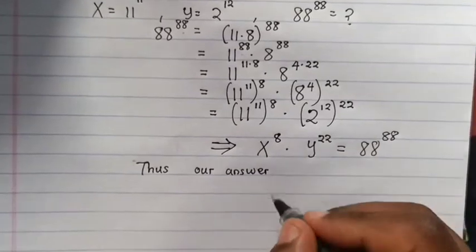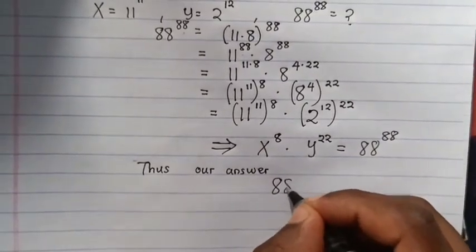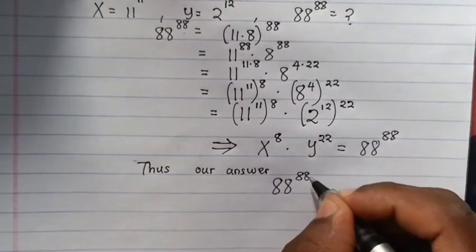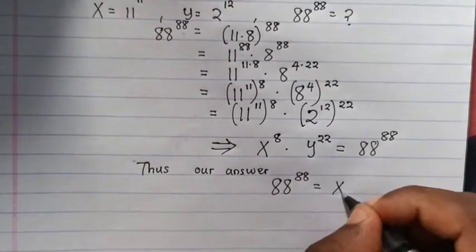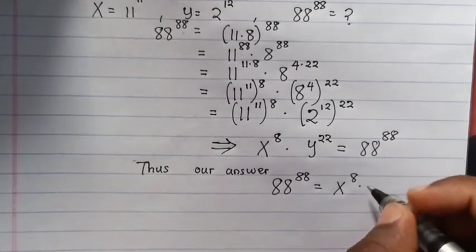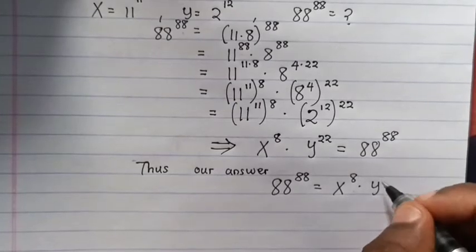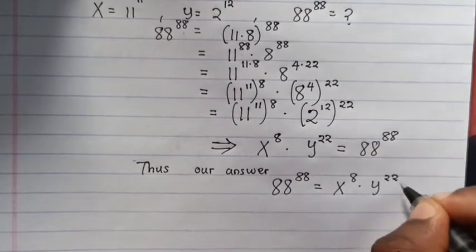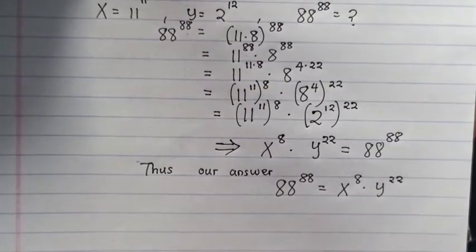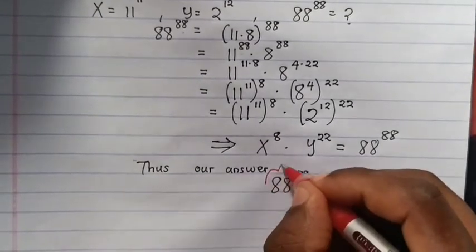88 to the power of 88 is the same as x to the power of 8 times y to the power of 22. This is the answer.